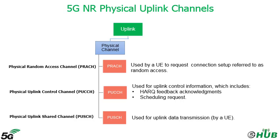Regarding the uplink data transmission process: a user equipment first requests gNodeB for physical time-frequency resources for data awaiting transmission. This is termed a scheduling request and is sent over the Physical Uplink Control Channel. In response, gNodeB sends a scheduling grant over the Physical Downlink Control Channel, giving permission to the UE to use certain time-frequency resources. Following the scheduling grant, the UE transmits its data over the Physical Uplink Shared Channel. gNodeB receives the uplink data and sends a HARQ acknowledgement indicating whether the uplink data was successfully decoded or not. In the case of decoding failure, retransmission is scheduled.